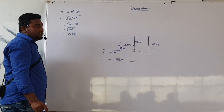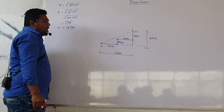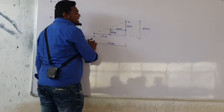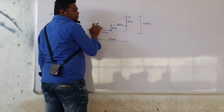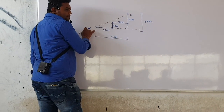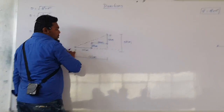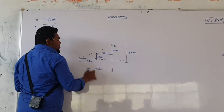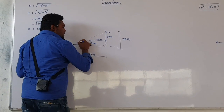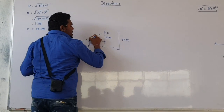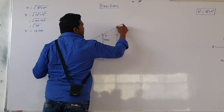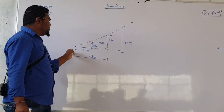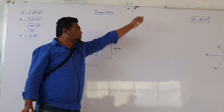Third question: find in which direction is his office situated with respect to his house. Currently, the office situation with respect to the house — in which direction is the office from the house?